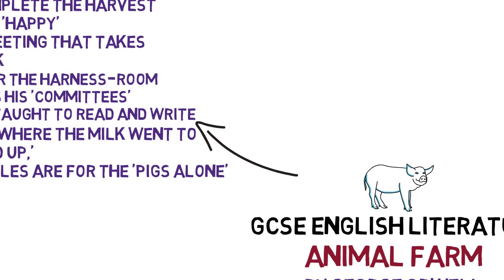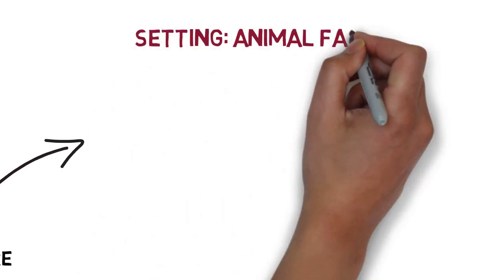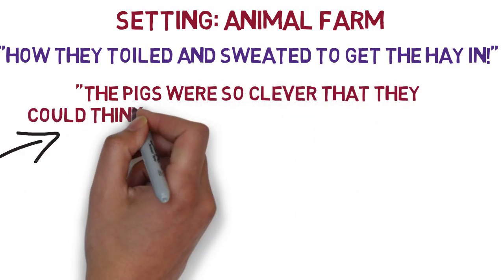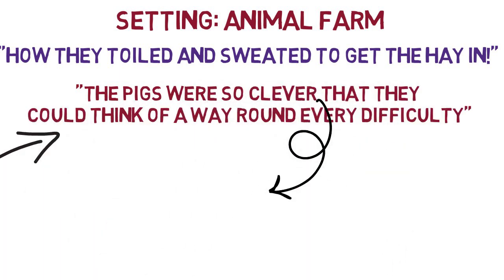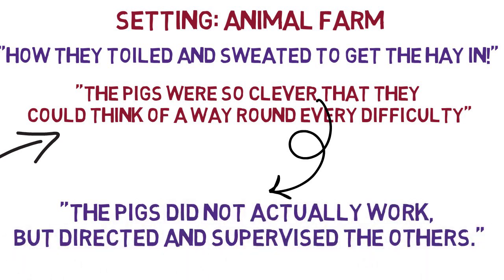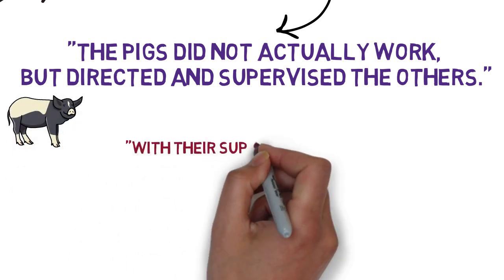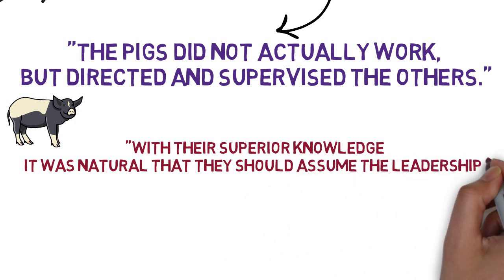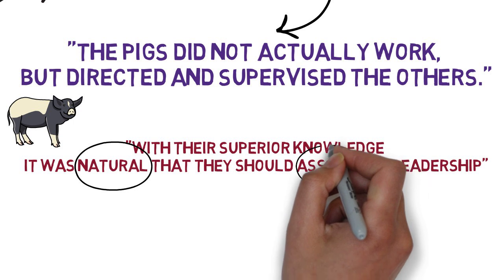This chapter is set on Animal Farm and we learn that the harvest has gone well through sheer hard work. We're reminded once more of the pigs' intelligence, and this leads up to the key quotation that the pigs did not actually work but directed and supervised others. There's a crucial line in this chapter: 'with their superior knowledge it was natural that they should assume the leadership role.' I'm going to circle 'natural' and 'assume' here and we'll return to this very shortly.